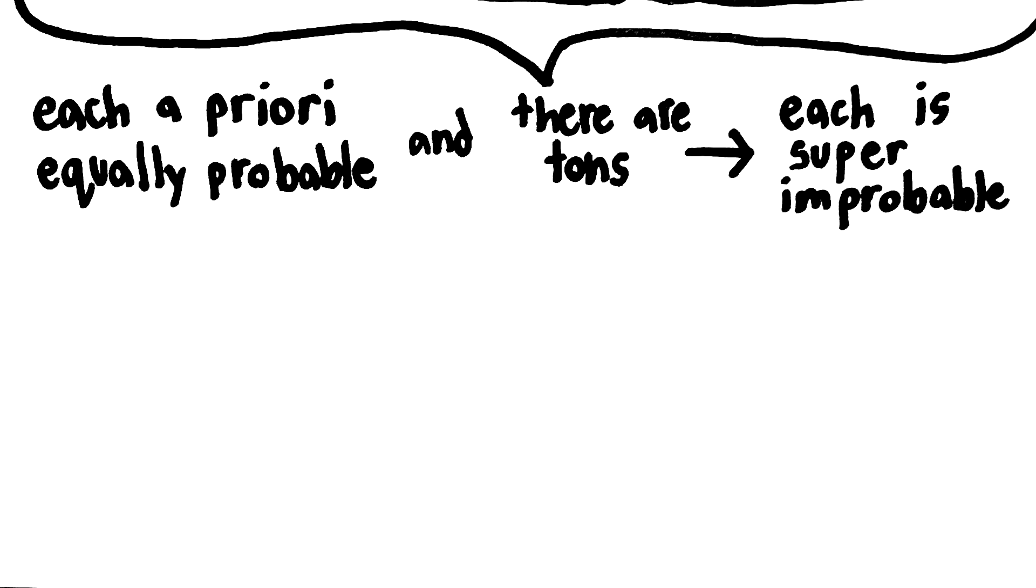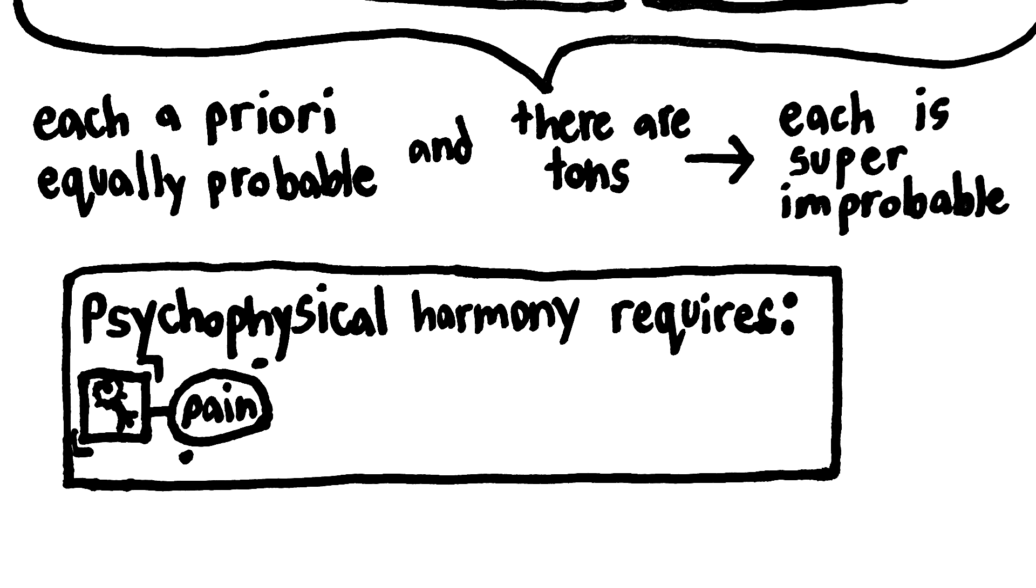Now, psychophysical harmony occurs when you get a specific kind of combination of psychophysical laws. For example, when C fibers fire, you need this to be connected to something negative, like pain.